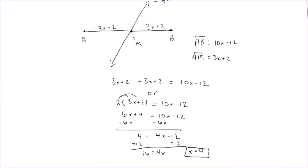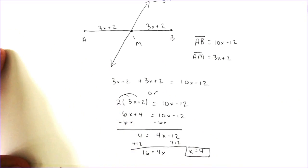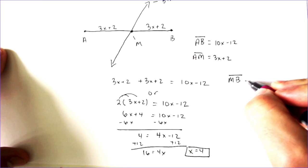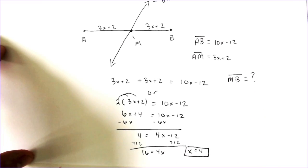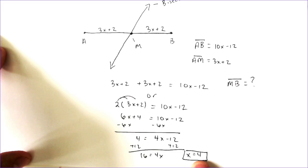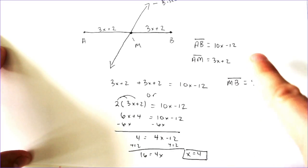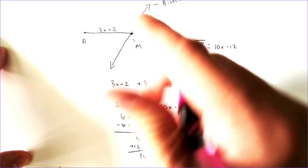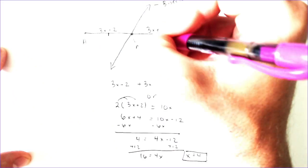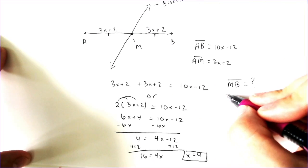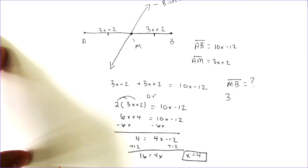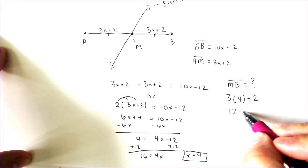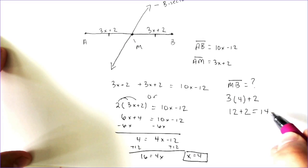So what if I wanted to find out what is the length of M to B? I would just plug in the 4 into either of the two originals. I'm going to plug it into the A to M part, because A to M is equal to M to B. So I'm going to do 3 times 4 plus 2, which is 12 plus 2, which is 14.